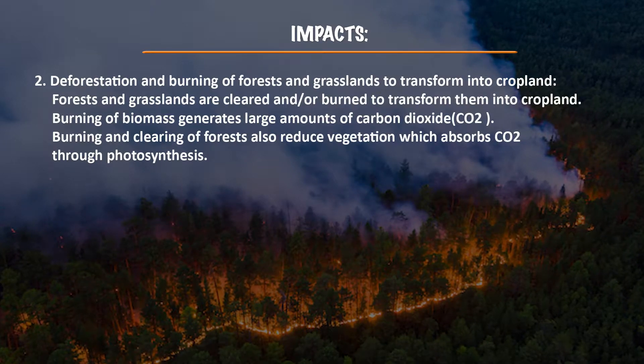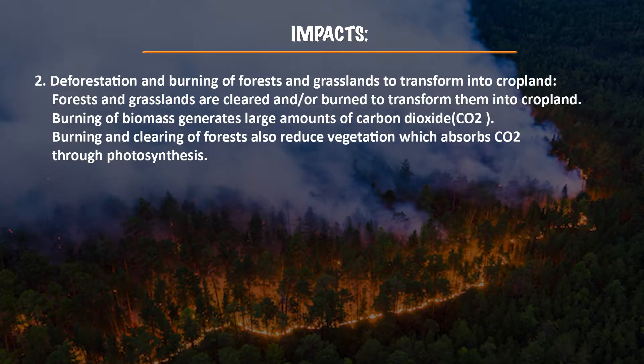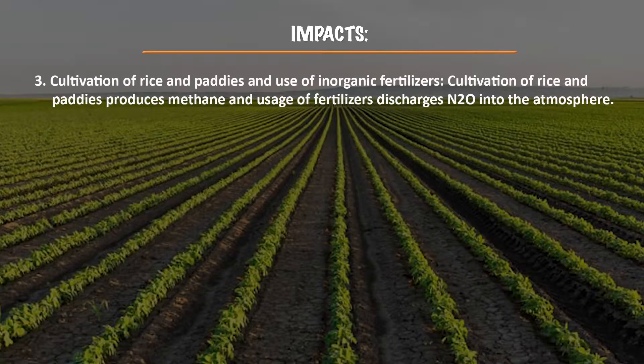Burning and clearing of forests also reduces vegetation that absorbs carbon dioxide through photosynthesis. The third contributing factor is the cultivation of rice and paddy crops, which produces methane, and the use of inorganic fertilizers, which discharges nitrous oxide into the atmosphere.